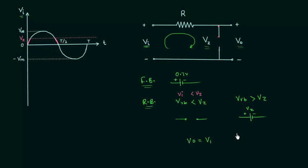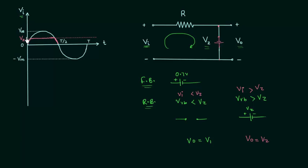Now we consider the case when vi is greater than Vz. In this scenario, the zener diode is replaced by a constant voltage source with potential difference equal to Vz, and the output voltage is equal to Vz. So we have a constant output voltage throughout this time interval when vi is greater than Vz, and it is equal to Vz.